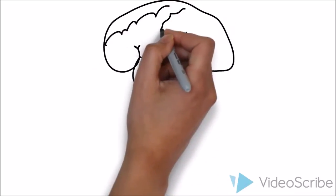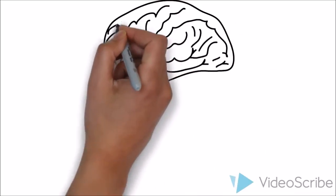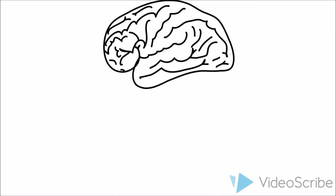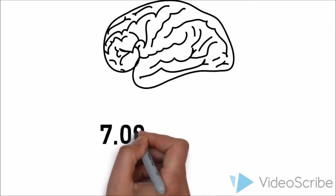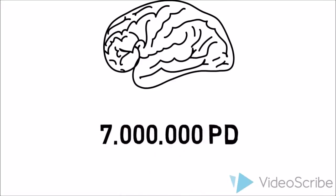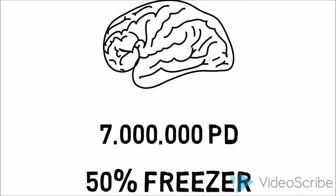This phenomenon is called freezing of gait and it is one of the most common and disabling symptoms in Parkinson's disease, which is a disease affecting the brain. About every second person of an estimated 7 million people with Parkinson's disease worldwide are affected.